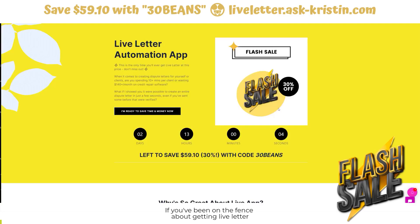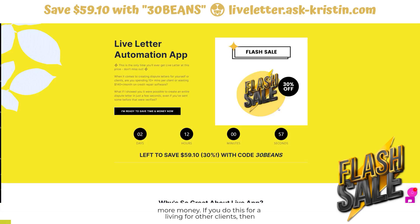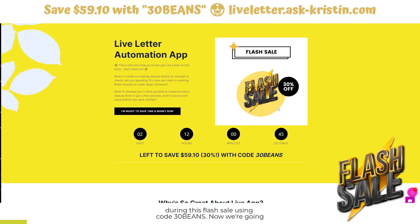If you've been on the fence about getting Live Letter Automation App, which is a tool that I built on top of Google Sheets that'll save you time and money and even make you more money if you do this for a living for other clients, then this is the video you want to watch. For the next two days, 12 hours and 48 seconds, you can save 30% off during this flash sale using code 30 beans.